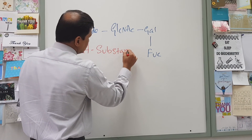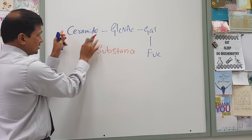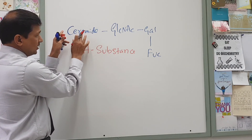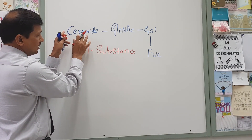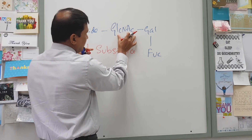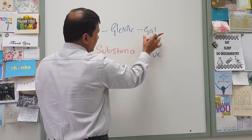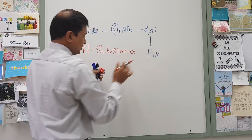So H substance is nothing but a ceramide, which is the lipid part of the blood group substance, with carbohydrate that is N-acetylglucosamine, galactose, and fucose.